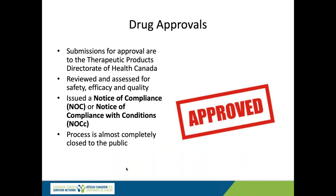Drug approvals: a new drug submission typically involves between 100 and 800 binders of data — electronic now, but essentially containing scientific information about the product's safety, efficacy, and quality. Health Canada is concerned about all three: safety, efficacy, and quality. Quality refers to the quality of the physical ingredient that goes into your body, whether it's a pill or otherwise.